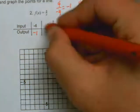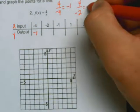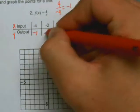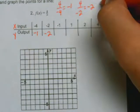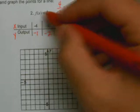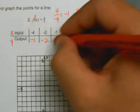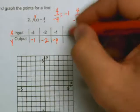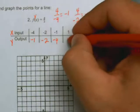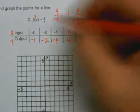So you got negative 2 here. You do it again, 4 divided by negative 1. 4 divided by negative 1 will give you your output, which is basically y. So 4 divided by negative 1 would be negative 4. And then you can kind of do these in your head: 4 divided by 1 is 4, 4 divided by 2 is 2, and 4 divided by 4 is 1.